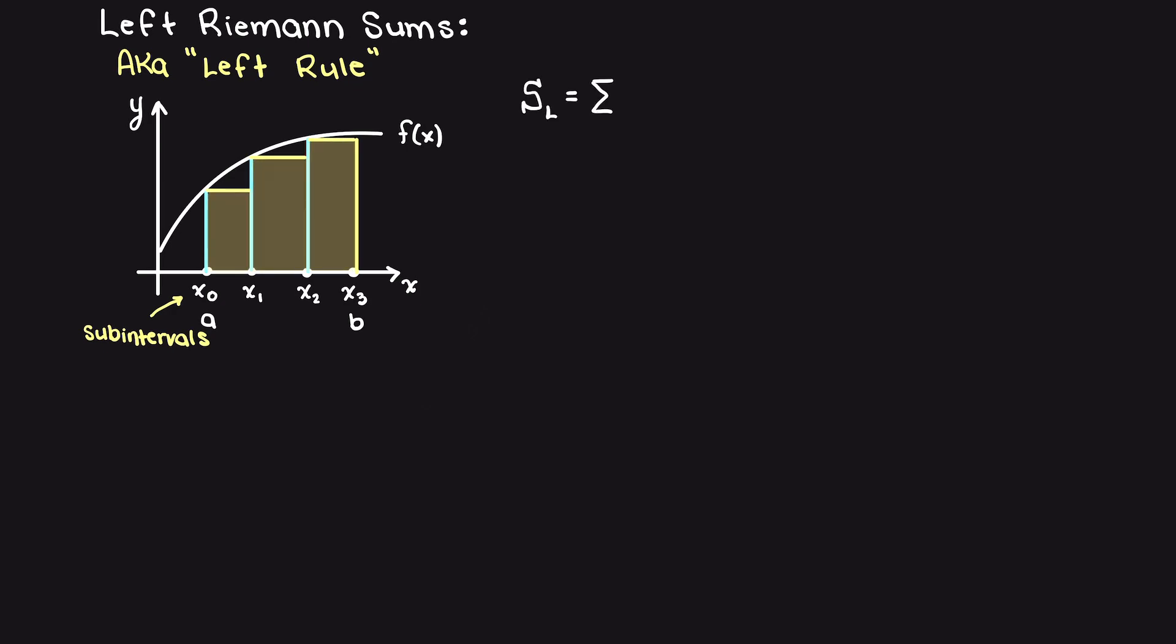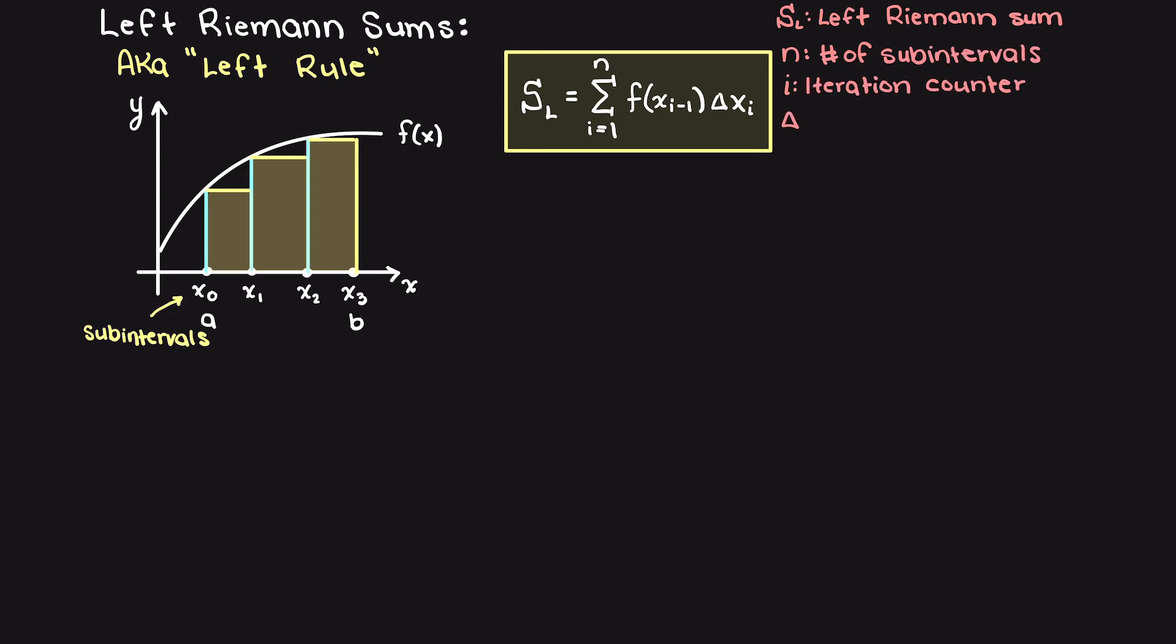I will write out the general formula for our left Riemann sums here with the meaning of each of these variables. Because we are using the left Riemann sum, the left base point will be evaluated, and that will be our height. Then we can multiply that by our base, which is again our change in x. Then the total area would be the summation of all of our rectangles together.